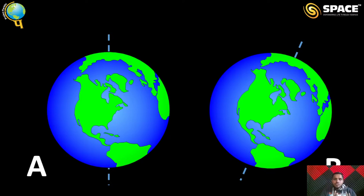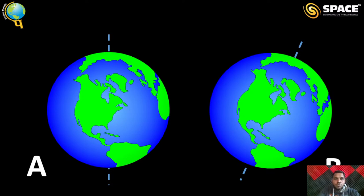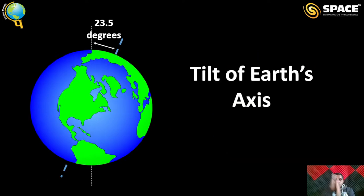I have two pictures, Picture A and Picture B. Tell me which is the correct representation of the Earth with its axis. B is the correct representation — that means Earth's axis is not straight, it is tilted. It is tilted by 23.5 degrees. This tilt is one of the reasons for the seasons on Earth.